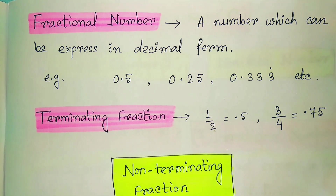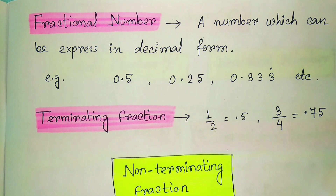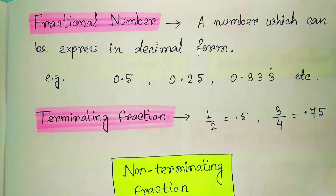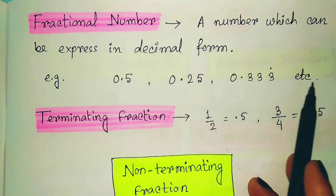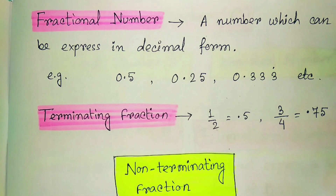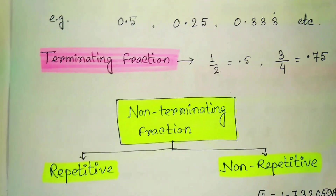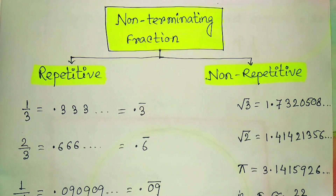There are many fractions where after the decimal there are infinite numbers. For example, 0.333... continuing infinitely — these are non-terminating fractions. Non-terminating fractions are of two types: repetitive and non-repetitive.